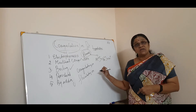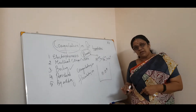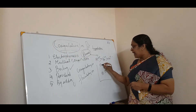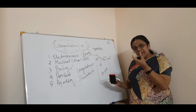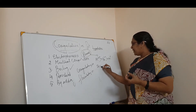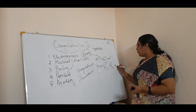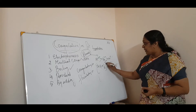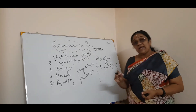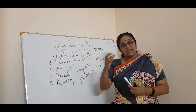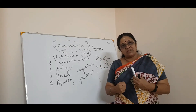Similarly, for a positive sol, the coagulating ions are negative ions. Greater the valence of the negative ion, greater is the coagulating power. For example: Fe(CN)₆⁴⁻ (charge 4−) > PO₄³⁻ (charge 3−) > SO₄²⁻ (charge 2−). The greater the valence of the coagulating ion, greater will be the precipitation. That is the Hardy-Schulze rule.